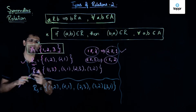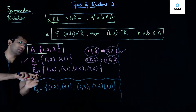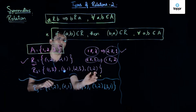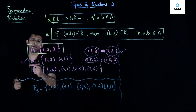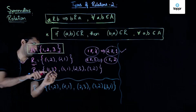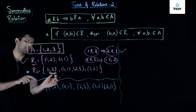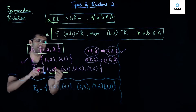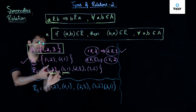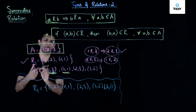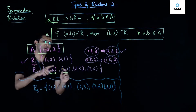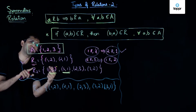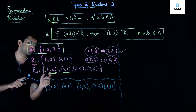Looking at another example, relation R2 contains the ordered pairs (1,3), (3,1), (2,3), and (3,2). If (1,3) is part of R2, that implies (3,1) is also in R2, which is true. Going in the reverse direction, if (3,1) belongs to R2, that implies (1,3) also belongs to R2, which is also the case here.